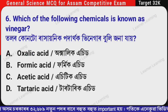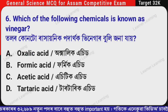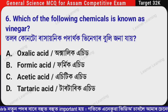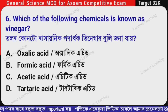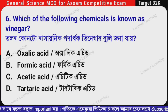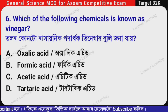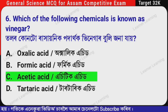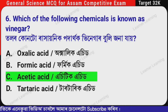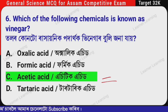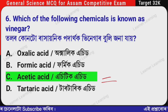Next question: Which of the following chemicals is known as vinegar? (Assamese: Toler konto rakhainik padar thak vinegar buli jona jaya?) The correct option is Option C — Acetic acid. Acetic acid is known as vinegar.